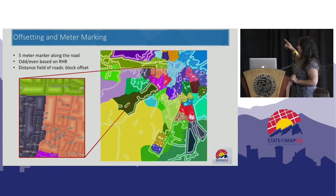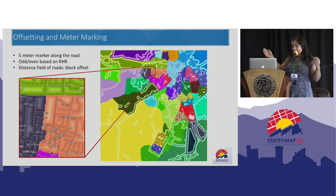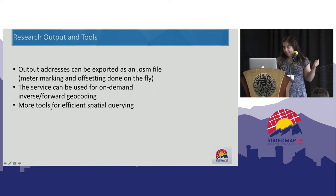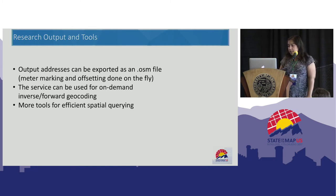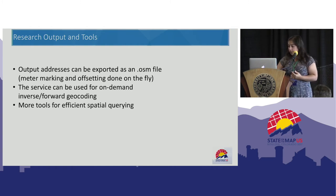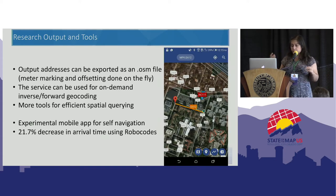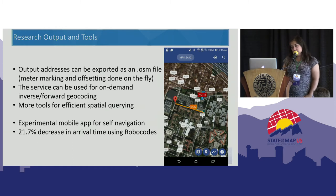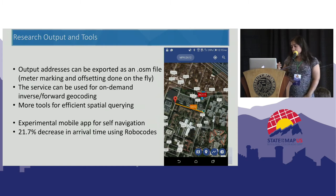Finally, we create the meter markers and block offsets. Meter markers are simply the measured markers along the road, and offsets are the distance fields from the road. The gradients you see represent a step size for the block. Our system generates OSM-format files with labeled roads. Since it doesn't make sense to output addresses for every five-by-five area, we compute meter marking and offsetting on the fly. We also added tools for efficient spatial querying and an experimental mobile app for self-navigation using Robocodes.